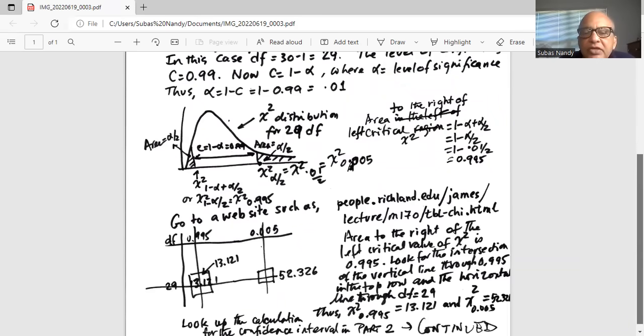In order to find these two critical values of chi-square, we go to a website such as people.richland.edu/james/lecture/m170/tbl-chi.html.